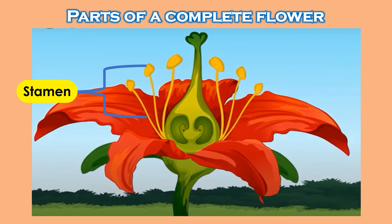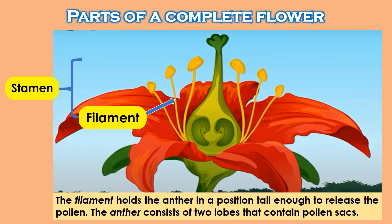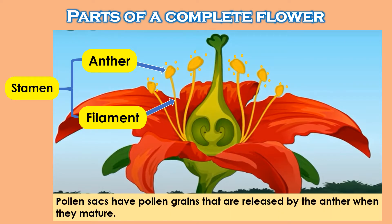Stamen: It is the male part of a flower. It consists of the filament and the anther. The filament holds the anther in a position tall enough to release the pollen. The anther consists of two lobes that contain pollen sacs. Pollen sacs have pollen grains that are released by the anther when they mature.